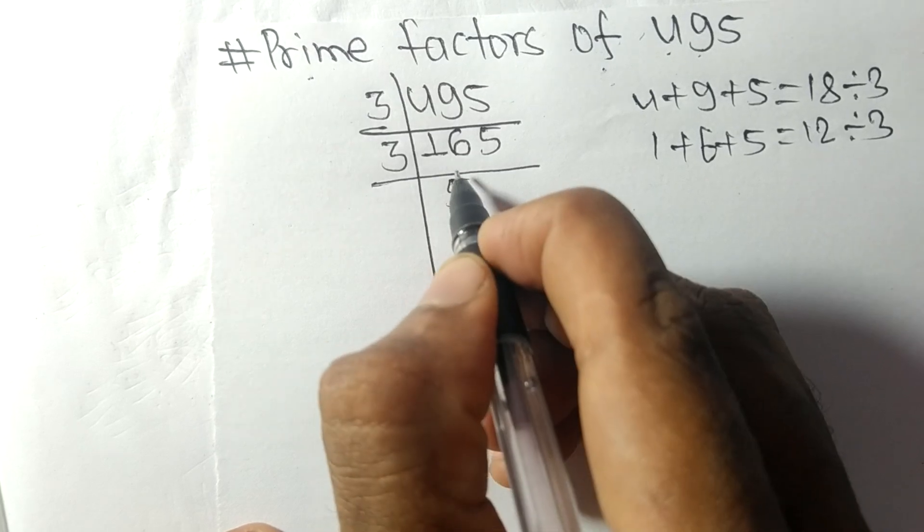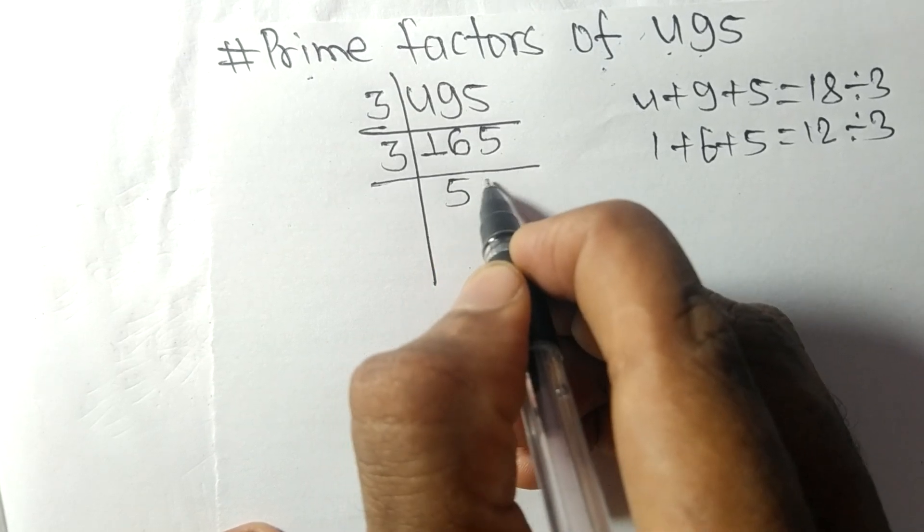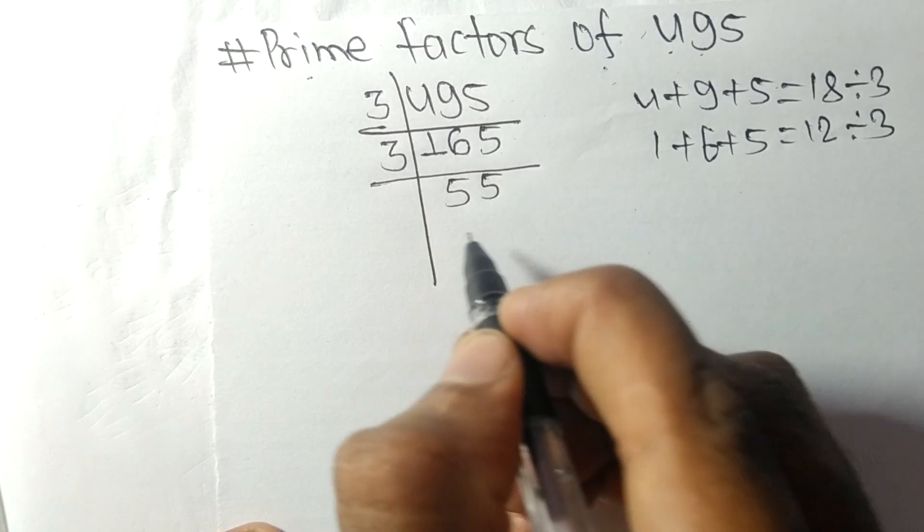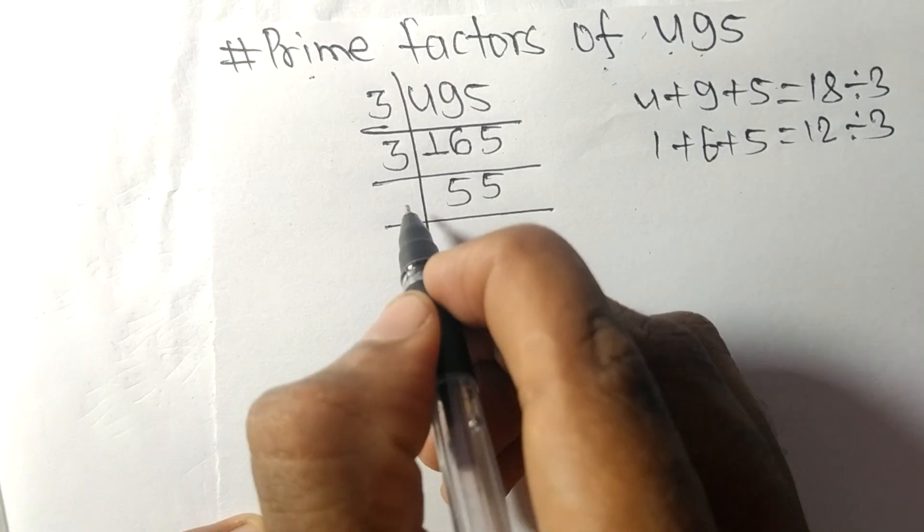3 times 5 equals 15 remainder 1. 1, 5, 15. 3 times 5 equals 15. Now we got 55 which is divisible by